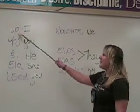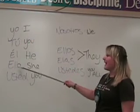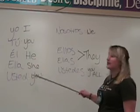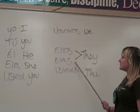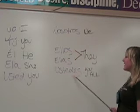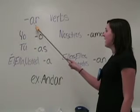They are: yo, which means I; tú, which means you; él, ella, and usted, which means he, she, and you; nosotros, which means we; ellos, ellas, and ustedes — ellos and ellas mean they, and ustedes means you all. If you notice, there are two different ways to say you. You can either say tú or usted. Tú is the informal way of saying you — you would use this when referring to peers or good friends. However, if you are talking to an elder or someone of higher authority, you would want to use usted.